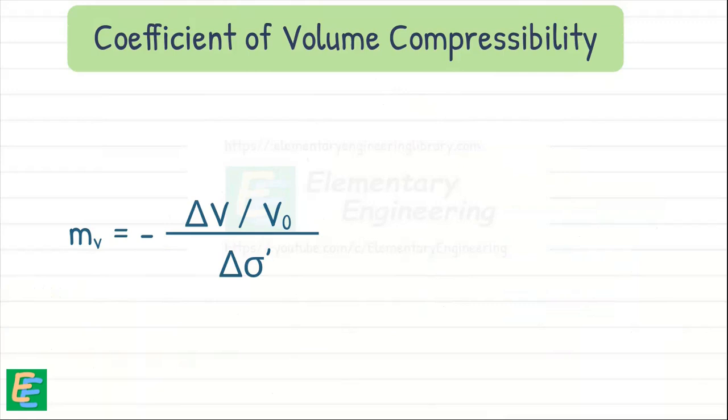We can see that if change in effective stress is constant, then a higher value of MV will result in larger volume change in soil.